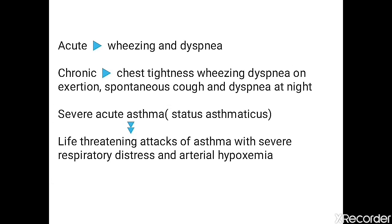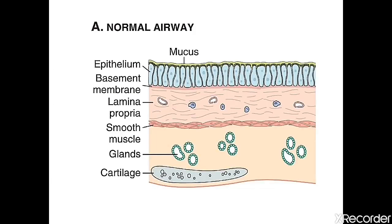Asthma can appear in three forms: acute, chronic, and severe acute asthma called status asthmaticus. Acute onset is characterized by wheezing and dyspnea within minutes or hours. Chronic asthma presents with chest tightness, wheezing, dyspnea on exertion, and nocturnal cough and dyspnea. Status asthmaticus involves life-threatening asthma attacks with severe respiratory distress and arterial hypoxemia.